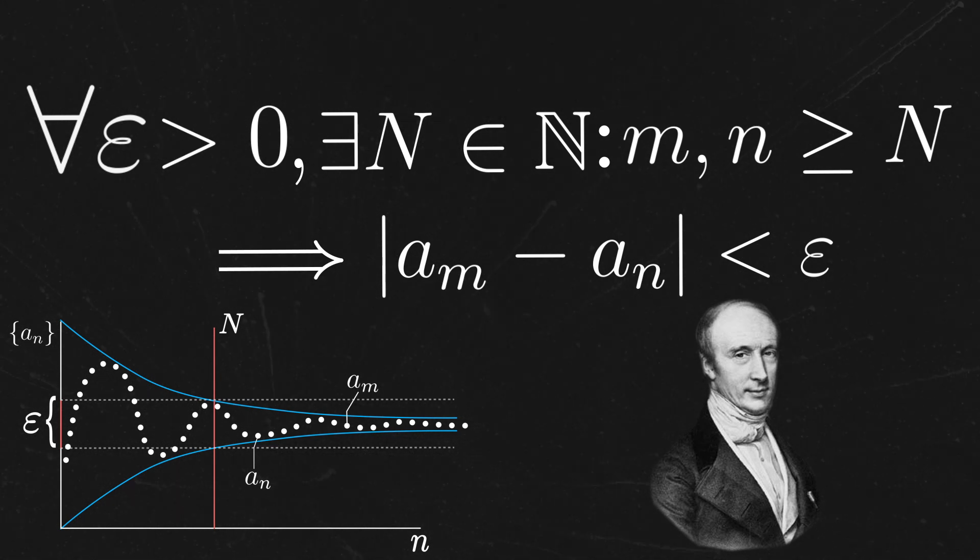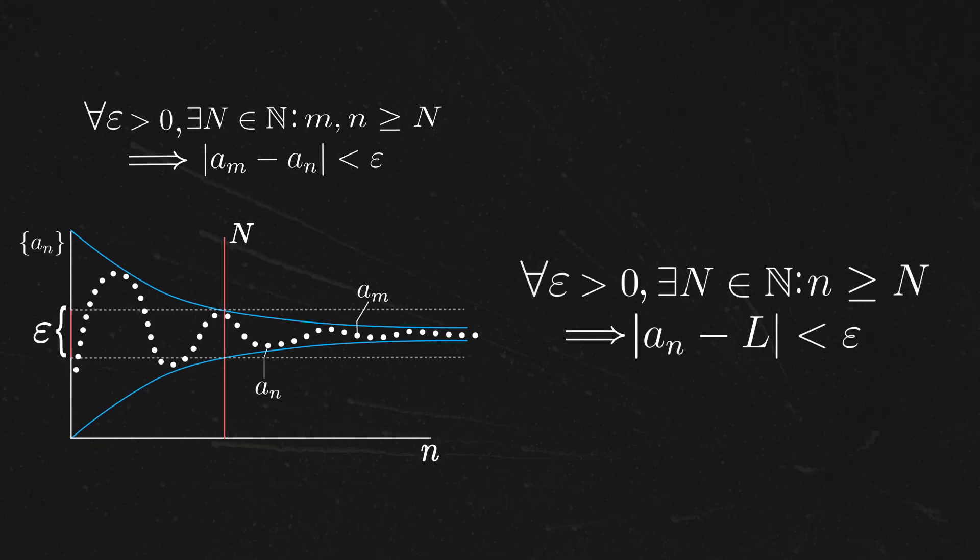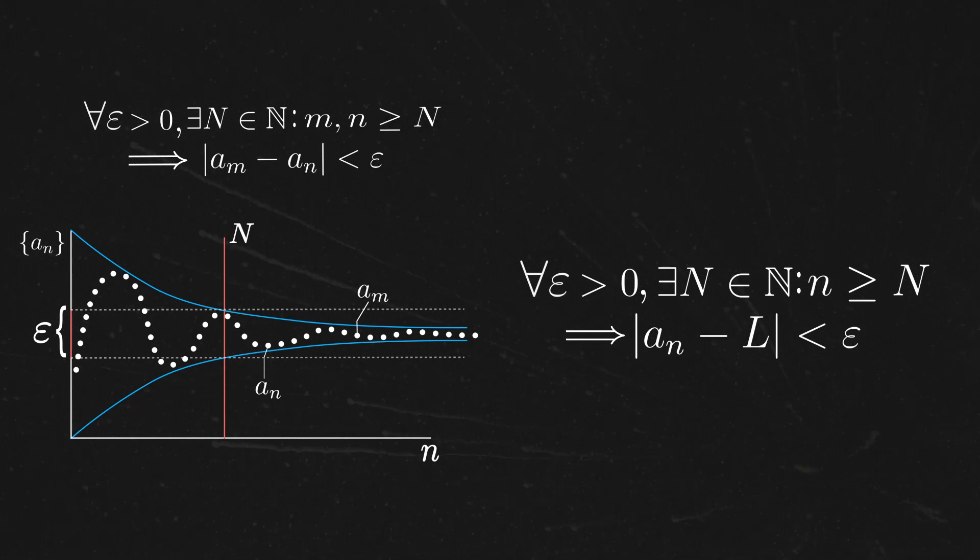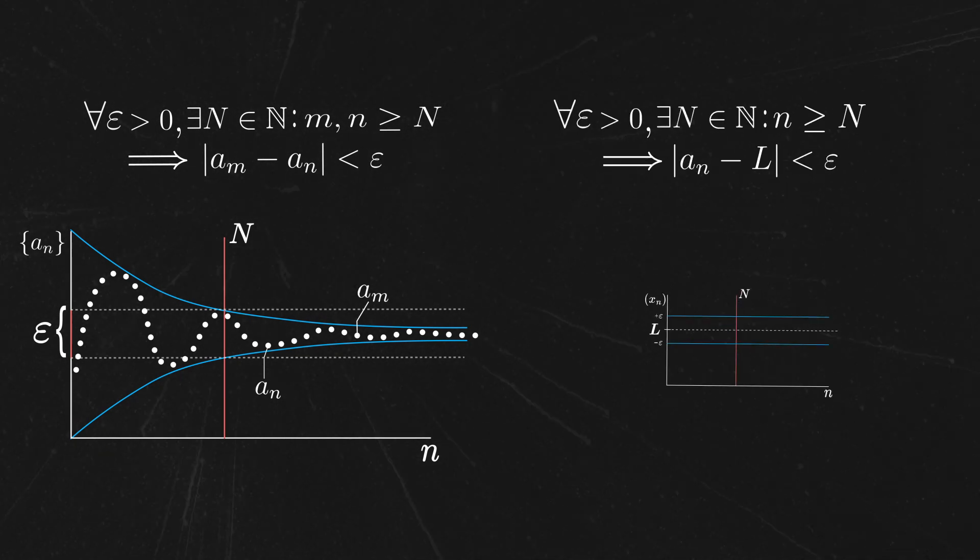Now, for those of you who have learned about epsilon delta proofs before, you might recognize that this looks extremely similar to the definition of convergent sequences of real numbers. However, there are several key differences here. Most notably, the definition of convergence